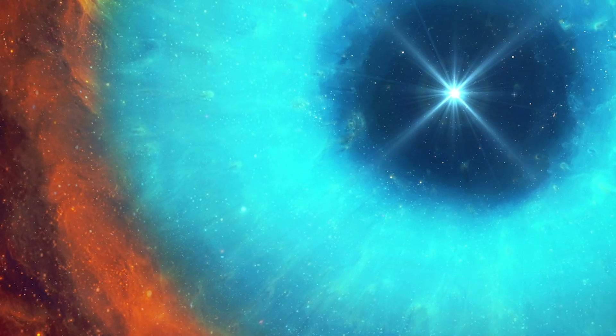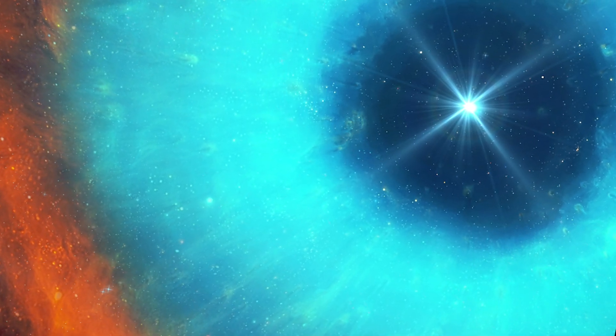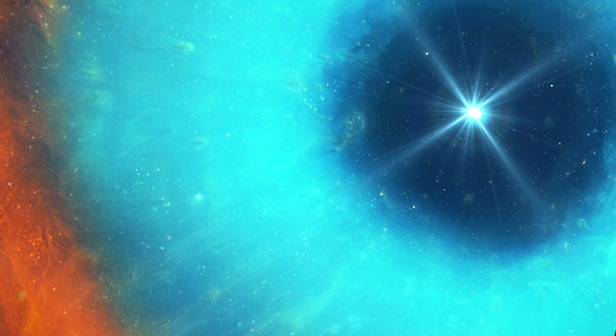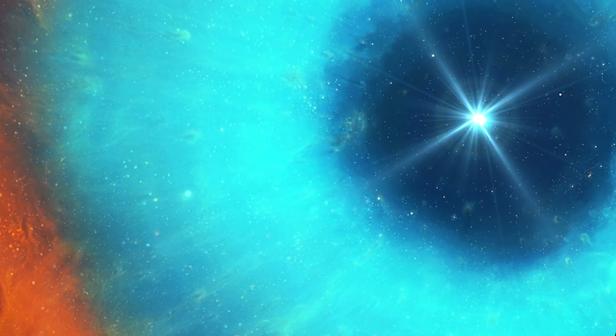This type of star expels most of its outer material and forms a planetary nebula. Notably, only the star's hot core remains, and provided the temperature within the core is maintained above 100,000 Kelvin, it transforms into a very hot white dwarf.